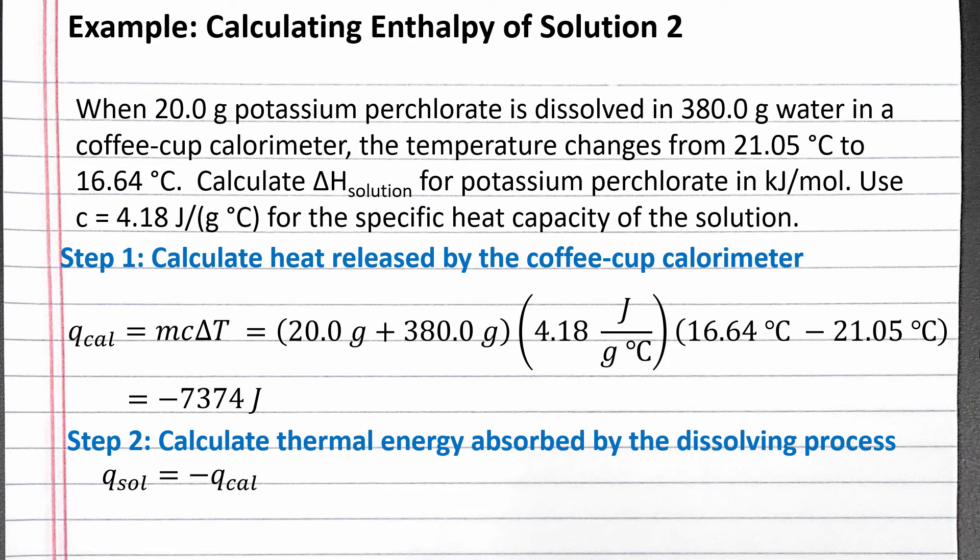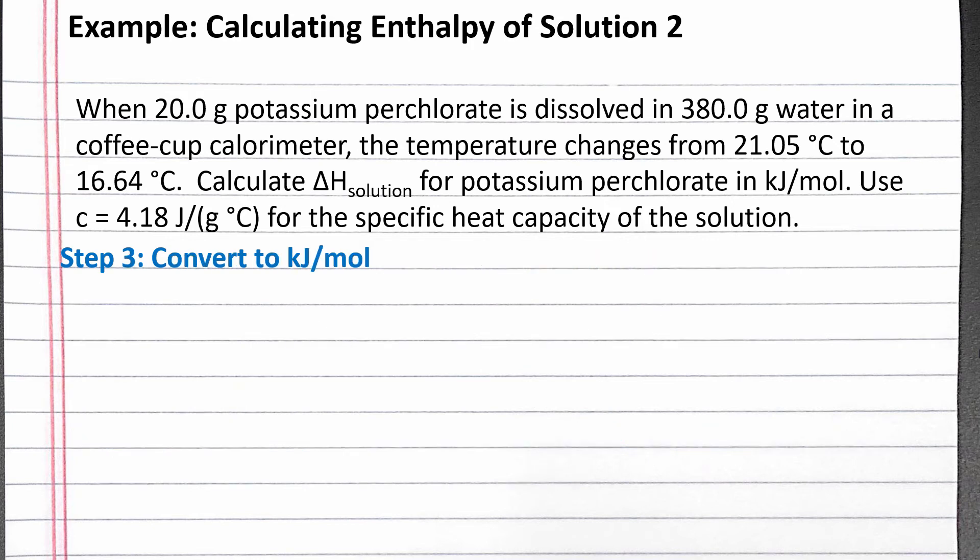Q solution equals positive 7,374 joules. Our last step is to convert to kilojoules per mole of potassium perchlorate. We didn't use one mole in this experiment—we used 20.0 grams. So we'll start our dimensional analysis with the heat absorbed,